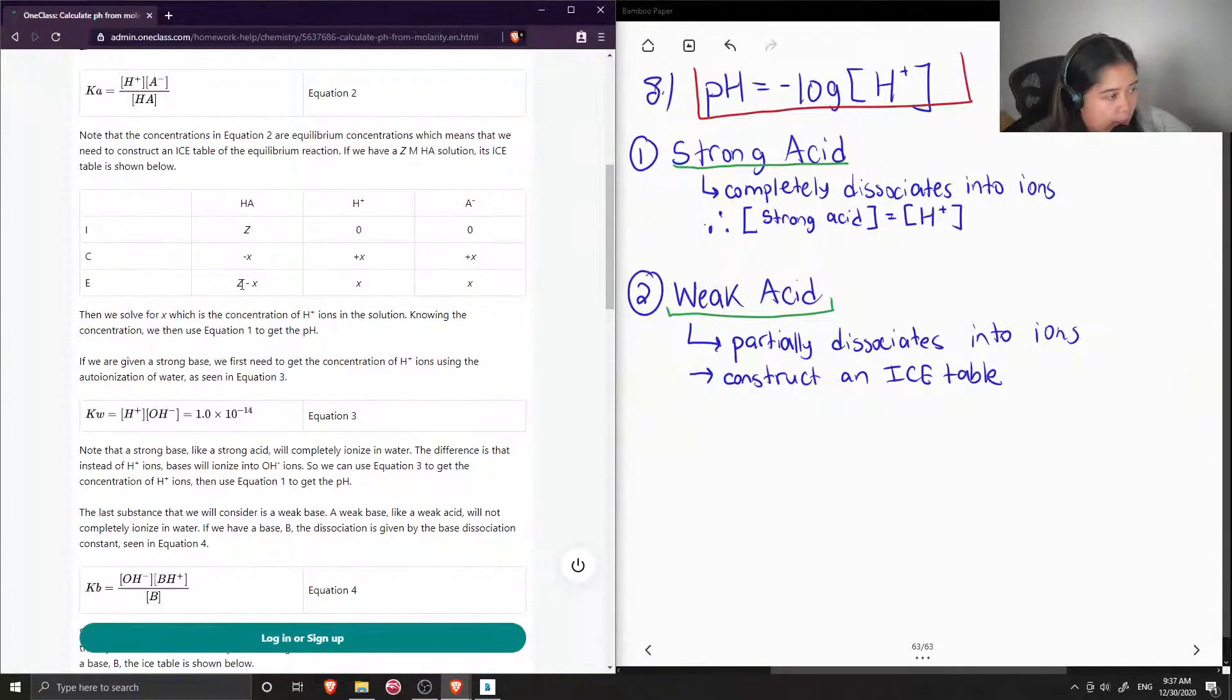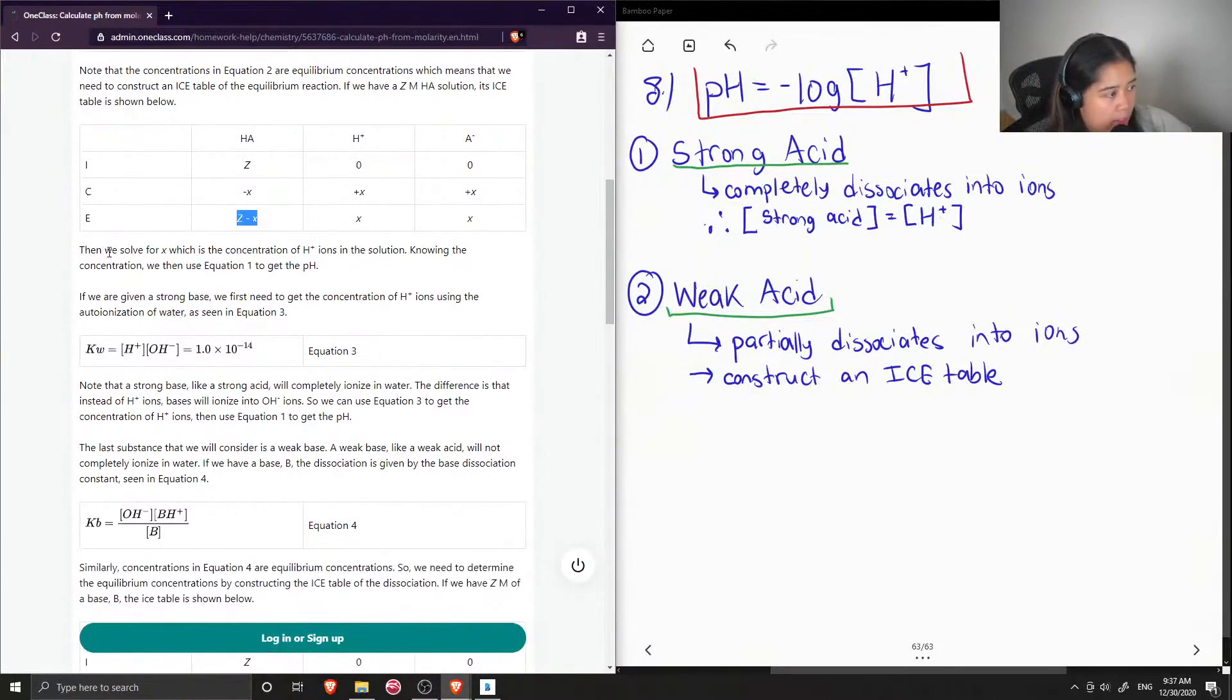And then this is the concentrations at equilibrium. So then we solve for X, which is the concentration of H+ ions in the solution. Knowing the concentration, we then use equation 1 to get the pH.